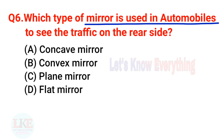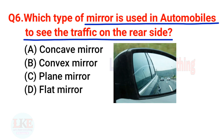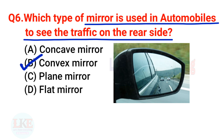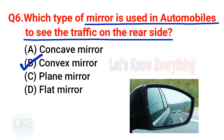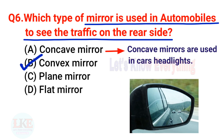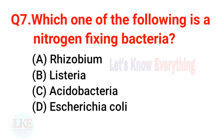Question 6: Which type of mirror is used in automobiles to see the traffic on the rear side? A) Concave mirror, B) Convex mirror, C) Plane mirror, D) Flat mirror. Right answer: option B, Convex mirror. Remember, concave mirrors are used in car headlights.